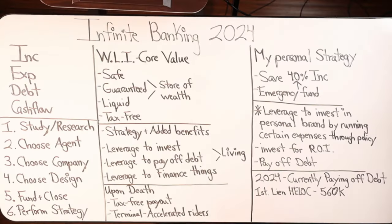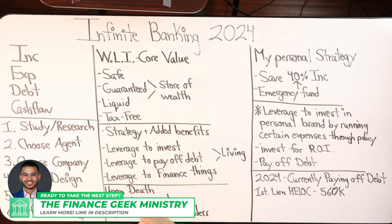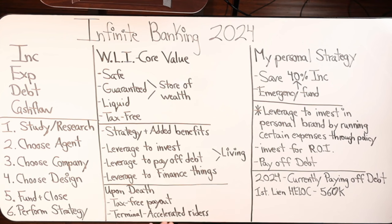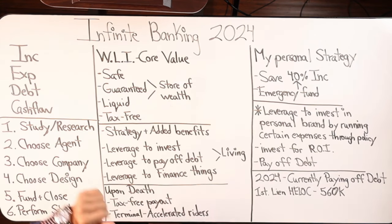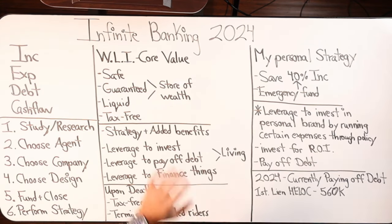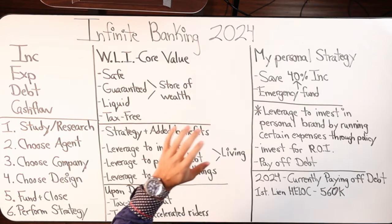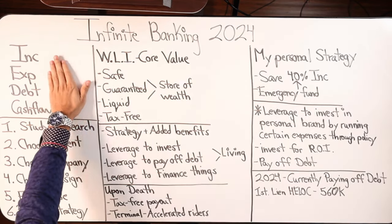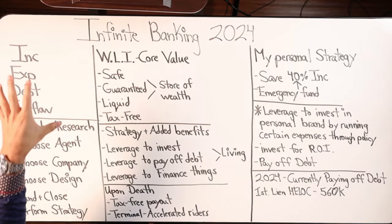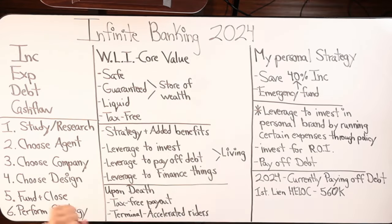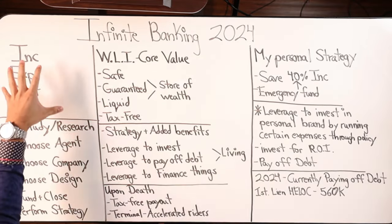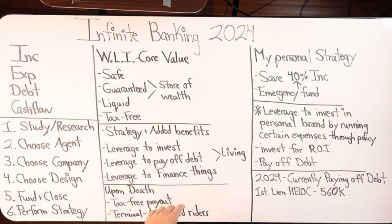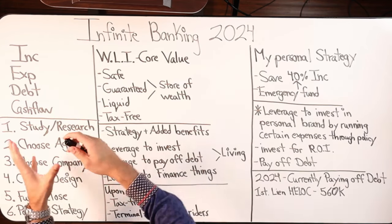With that being said, let's take a look at the whiteboard. I'm going to break it down in different sections. My golden rule — you'll hear me say this all the time in my videos — you must know your numbers. Prior to even getting involved, buying a policy, I really encourage and advise that you know your financial numbers, the current position that you are in. And I have a personal method.